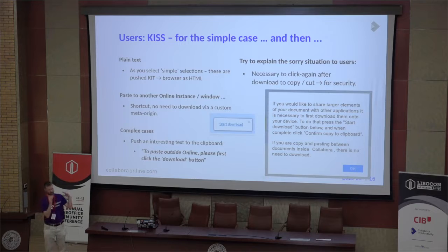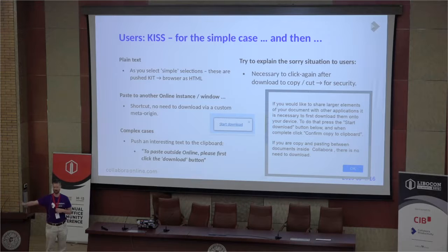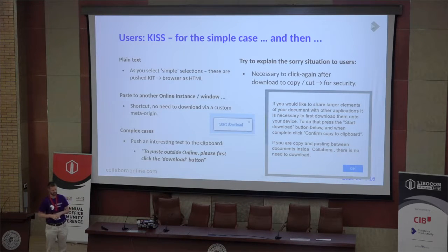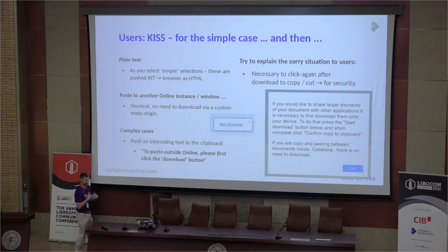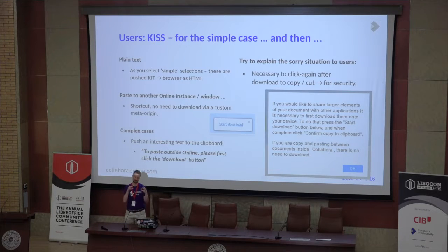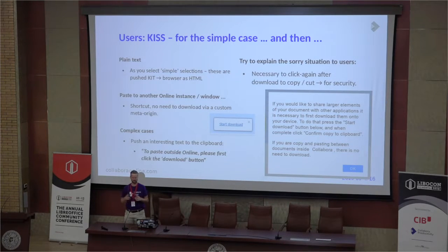If you click on a complex chart and want to paste it into Microsoft Word Online, we need to be able to download it as an image and in various types, populate the clipboard, and then paste it elsewhere. So you have this download button that pops up and a dialogue that tries to explain the sorry situation we're in. But because of this magic inside that gives the origin of the content, for any copying and pasting between Online instances — different tabs and so on — we can now do a really good job.